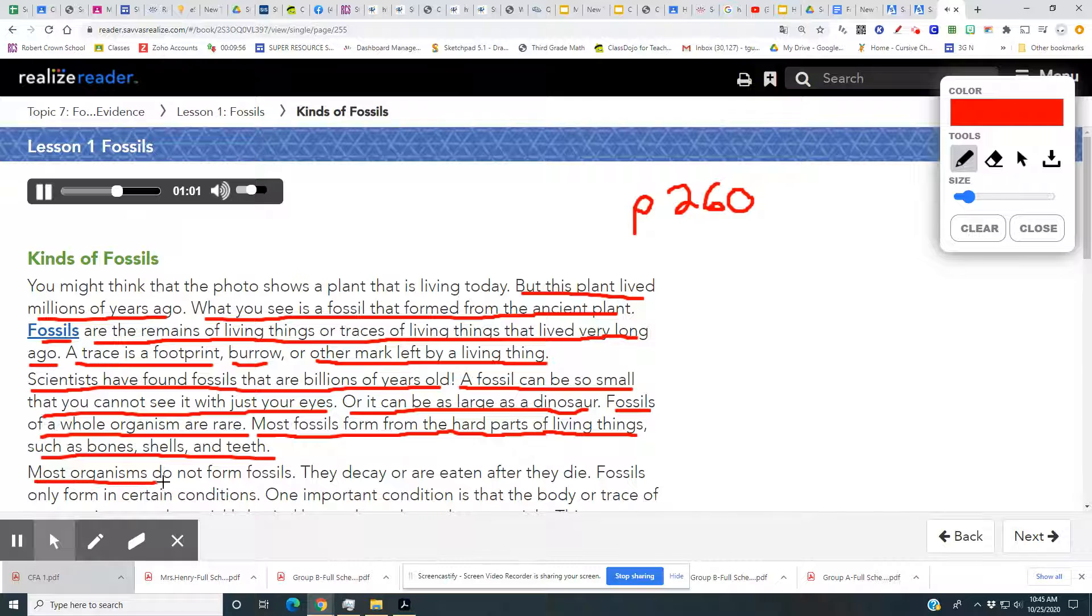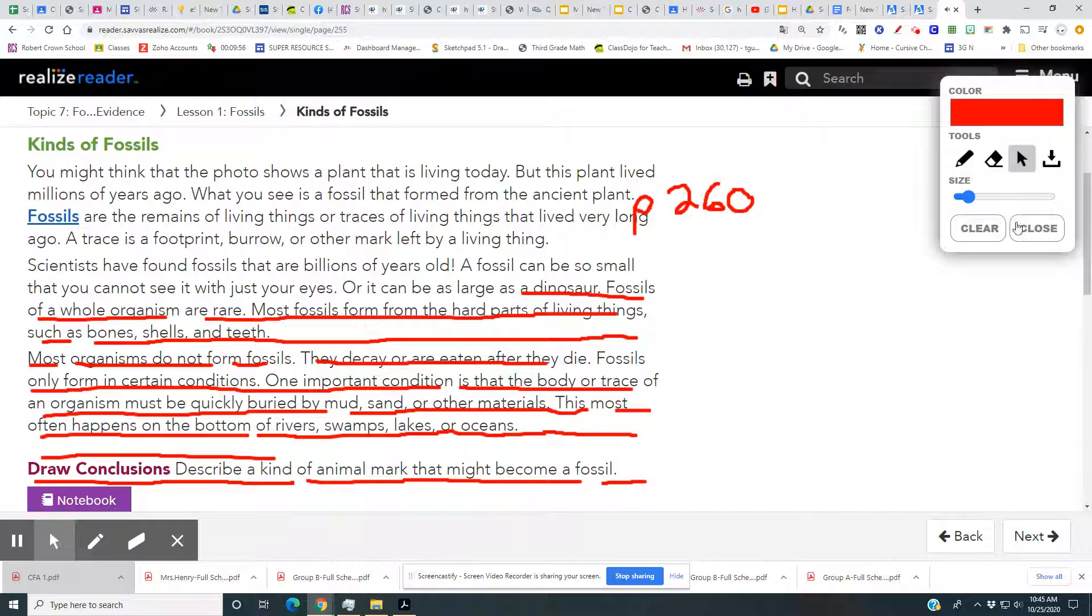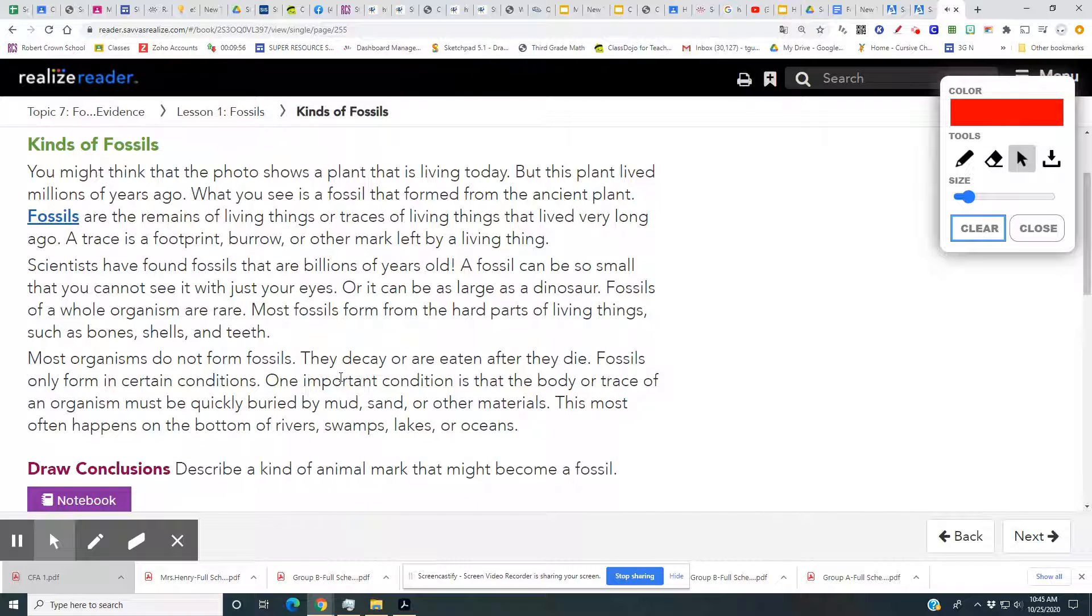Most organisms do not form fossils. They decay or are eaten after they die. Fossils only form in certain conditions. One important condition is that the body or trace of an organism must be quickly buried by mud, sand, or other materials. This most often happens on the bottom of rivers, swamps, lakes, or oceans.